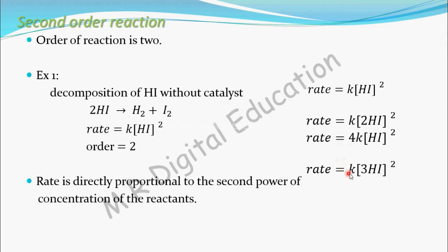Now I will increase the concentration of the reactants 3 times. Let's see how much the rate will increase. Take the 3 outside: 3 squared equals 9, so the rate will increase 9 times — that is, 3² times.